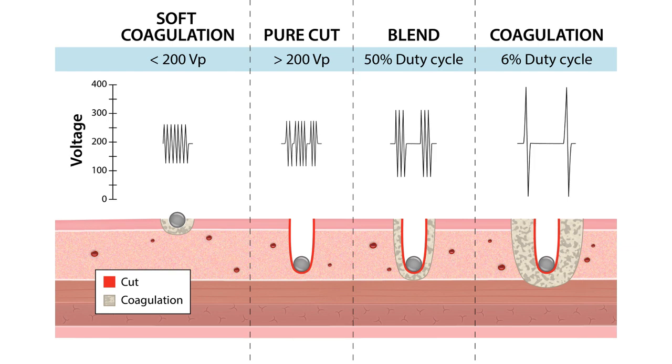Blend current has 50% duty cycle. A coagulation current has 6% duty cycle. That means with that 6% duty cycle, there is high voltage and then a lot more inactivity before the next cycle starts. And that inactivity would allow the coagulation to happen.